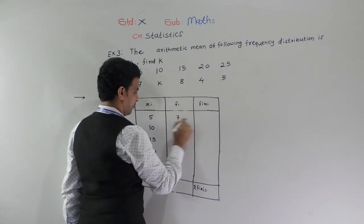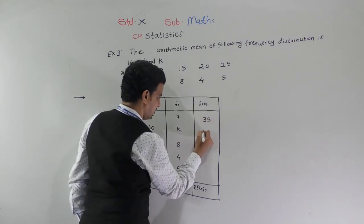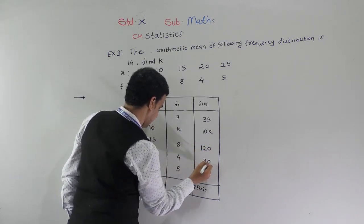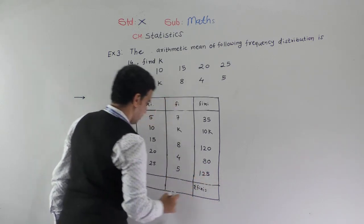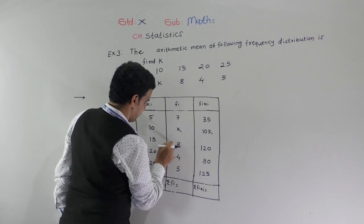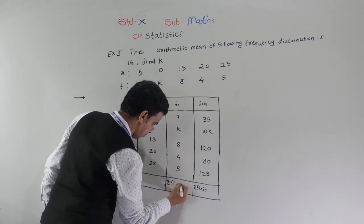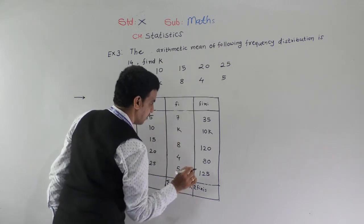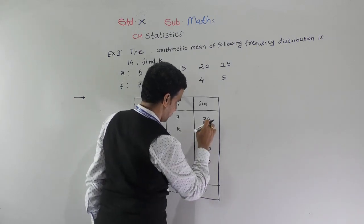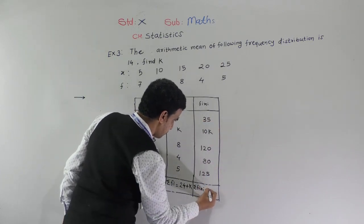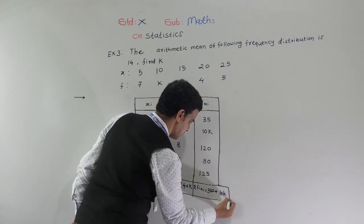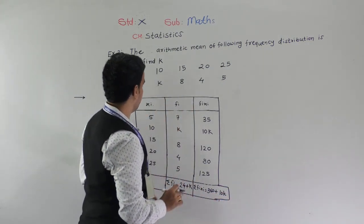Now we find fixi: 5 into 7 is 35, 10 into k is 10k, 15 into 8 is 120, 4 into 20 is 80, and 25 into 5 is 125. Summation fi: 7 plus 8 is 15, plus 4 is 19, plus 5 is 24, so summation fi is 24 plus k. Summation fixi: 120 plus 80 is 200, plus 125 is 325, plus 35 is 360, so summation fixi is 360 plus 10k.